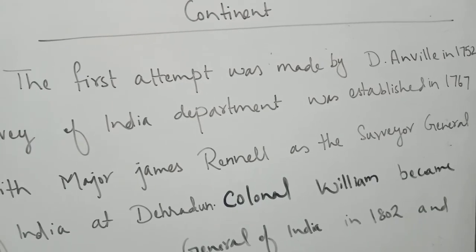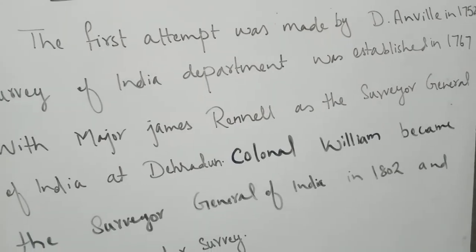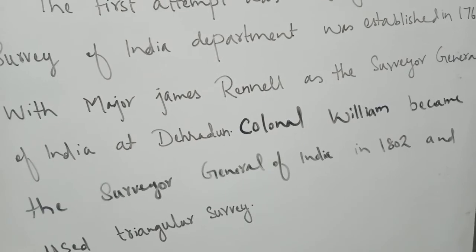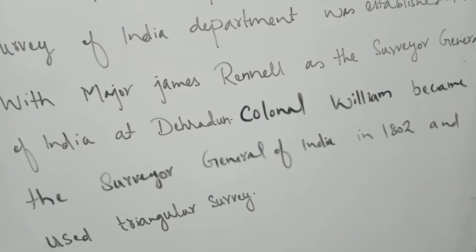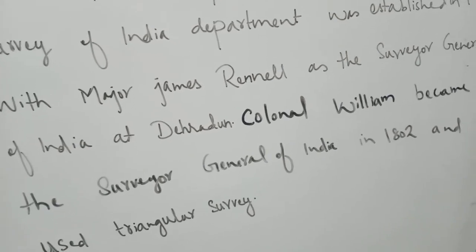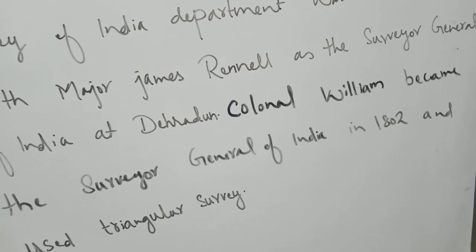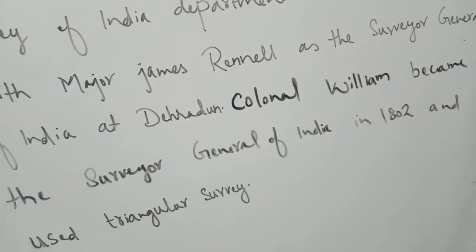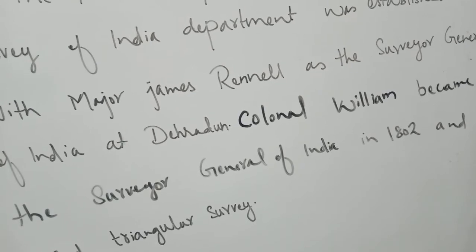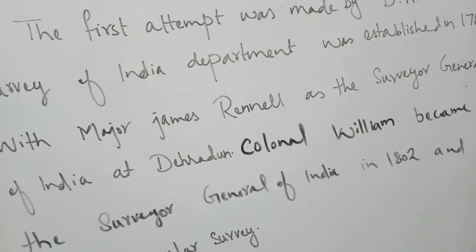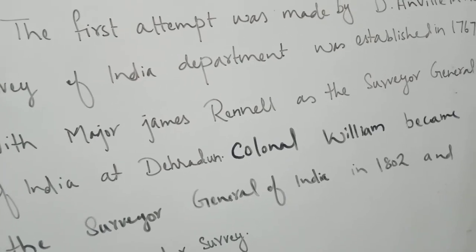A very important use and amendment was done when Colonel William became the Surveyor General of India in 1802. He started to use the triangular survey, which plays a very important role in topographical mapping. After that, another person, Sir George, made different amendments in using the triangular survey. The establishment, formation, and development of topographical maps basically deals with a number of eras.